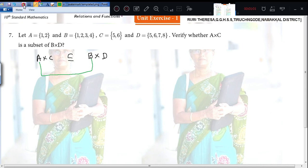Next, you check C and D. C is what? 5 comma 6. D is what? 5 comma 6 comma 7 comma 8. So C is a subset of D.